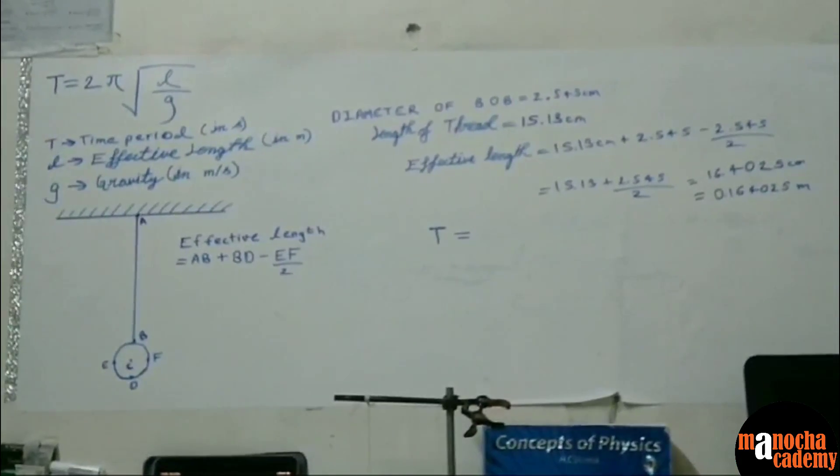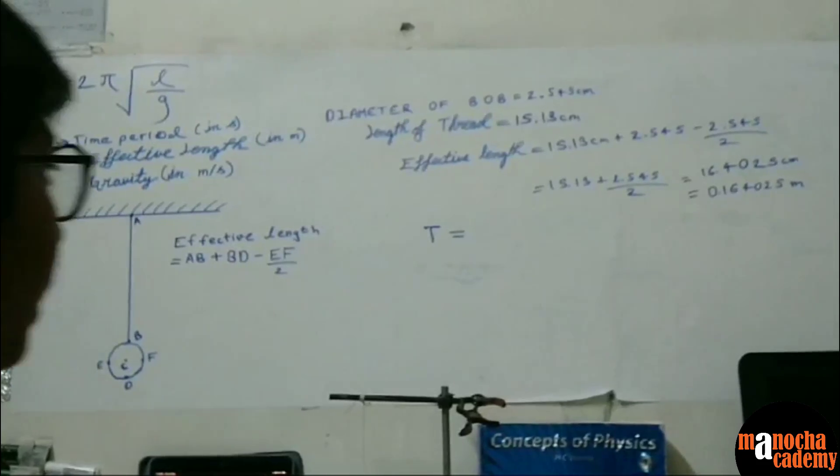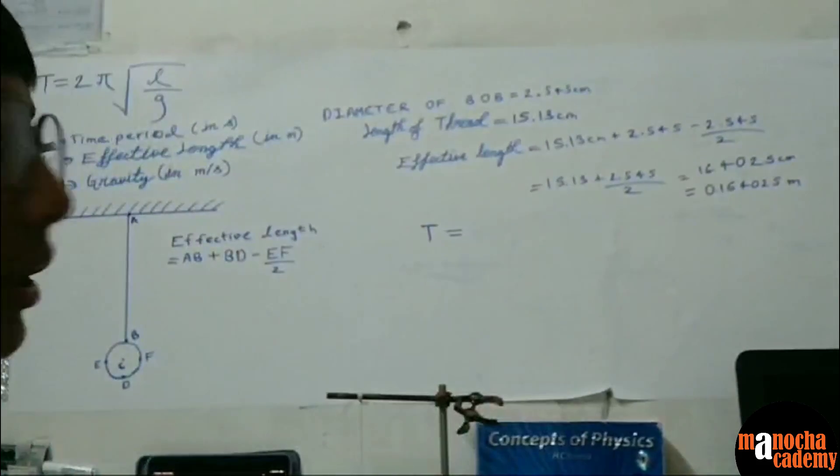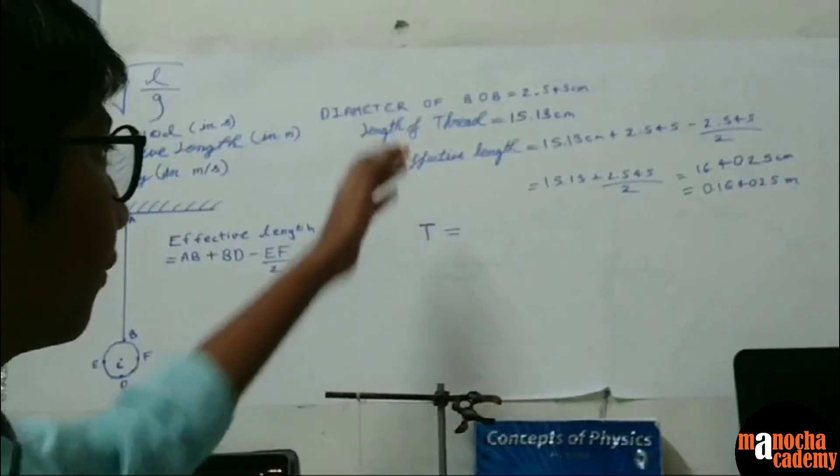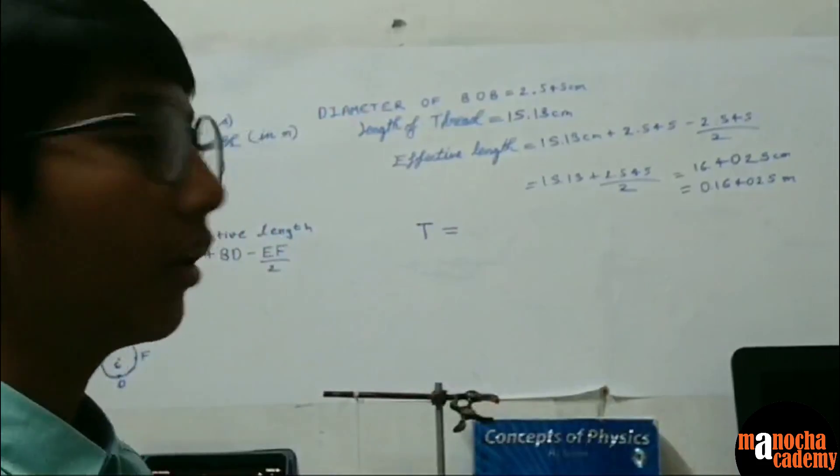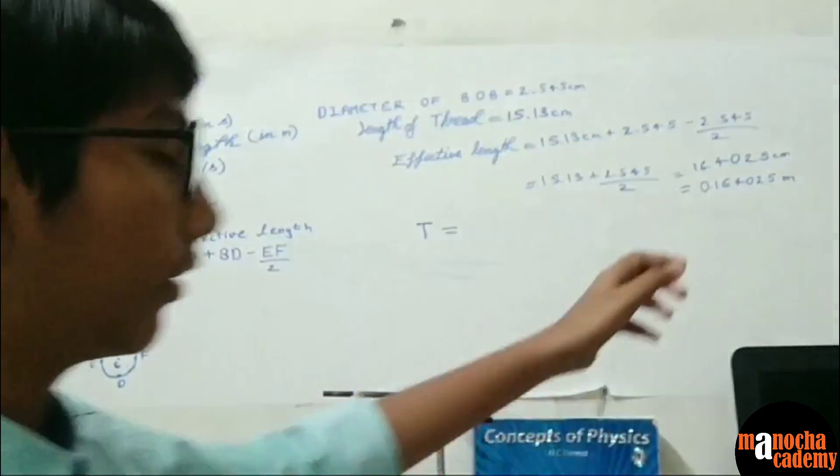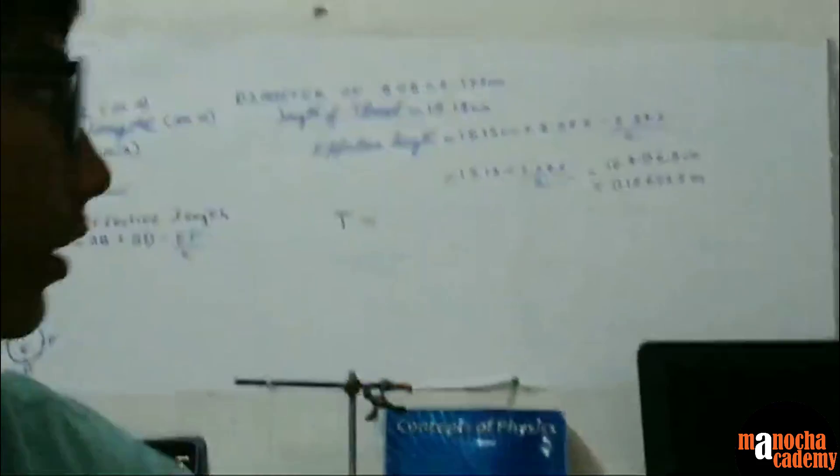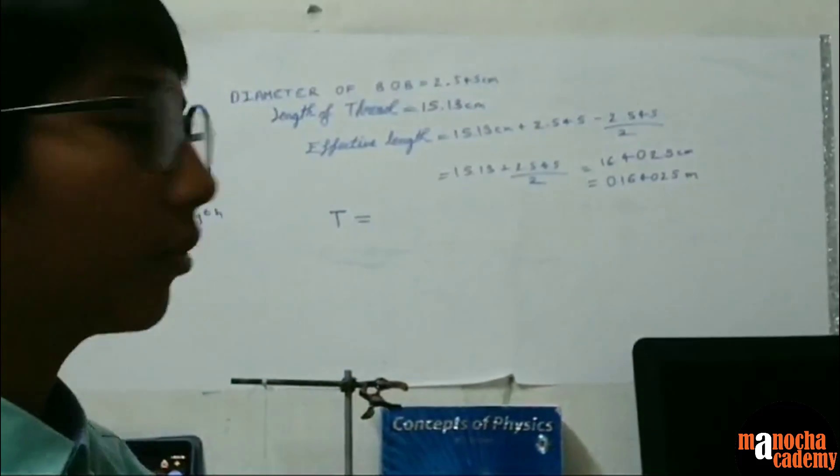Next we need to find the length of the thread, which will be equal to 15.13 cm. And after that we can substitute both these values in the effective length formula. And we will finally get the value of 16.4025 cm.